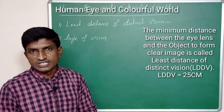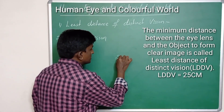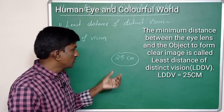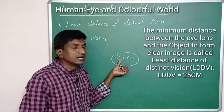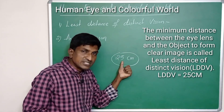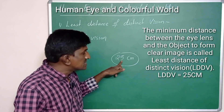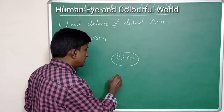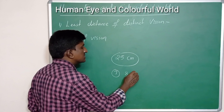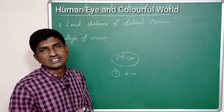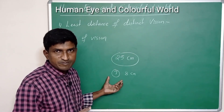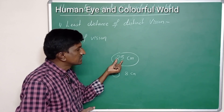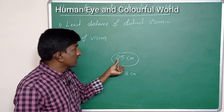The minimum distance from our eye to observe an object clearly is called the least distance of distinct vision. For a general human being, the least distance of distinct vision is 25 centimeters — less than 25 centimeters, we cannot see clearly. For children, the least distance of distinct vision may be 7 to 8 centimeters because their muscles are flexible. As age increases, the flexibility of the muscles decreases, so the average for human beings is 25 centimeters.